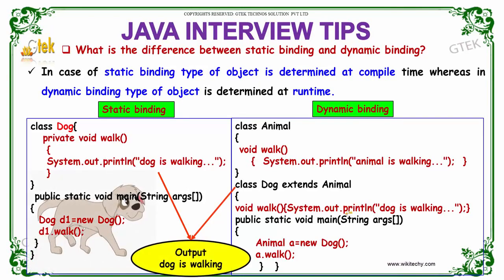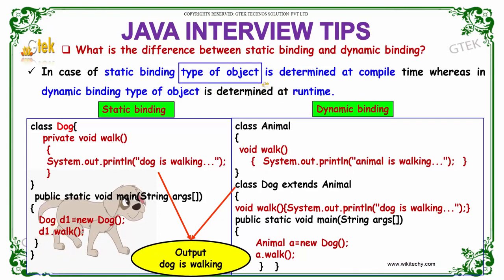What is the difference between static binding and dynamic binding? In case of static binding, the type of the object is determined only during compile time.